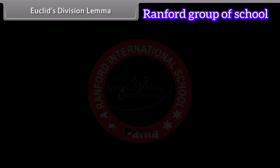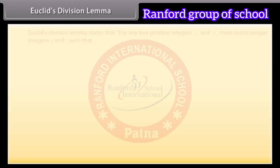Euclid's division lemma states that for any two positive integers A and B, there exist unique integers Q and R such that A is equal to BQ plus R, where 0 is less than or equal to R, which is less than B.